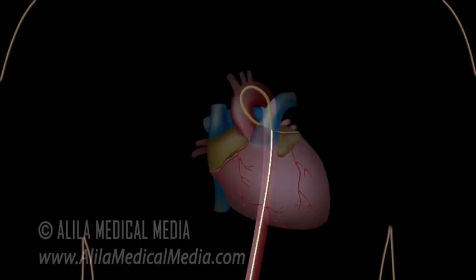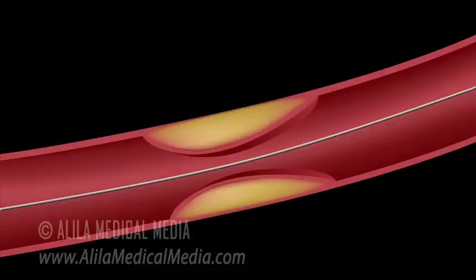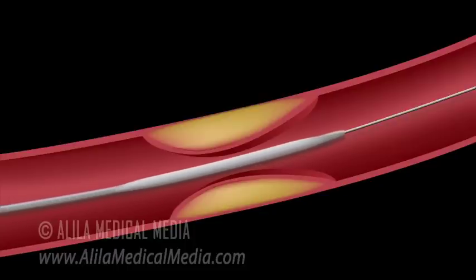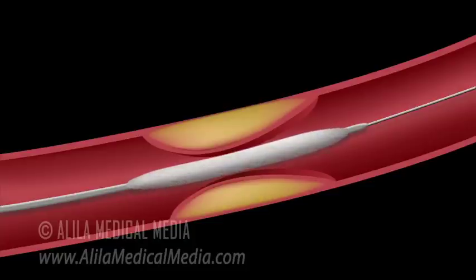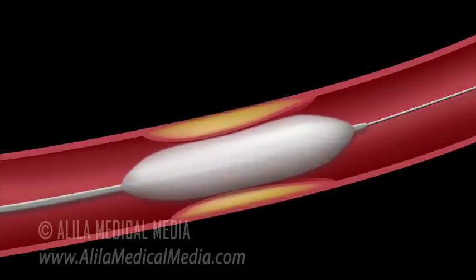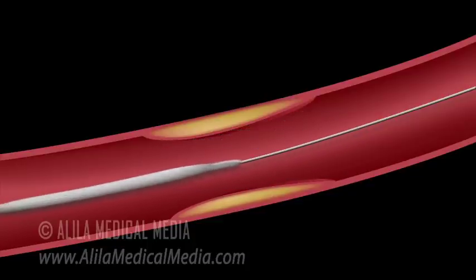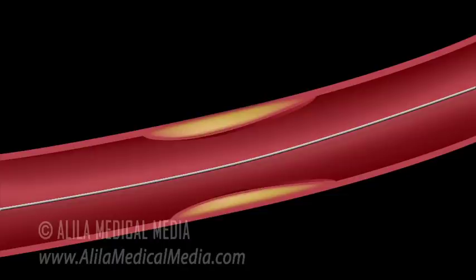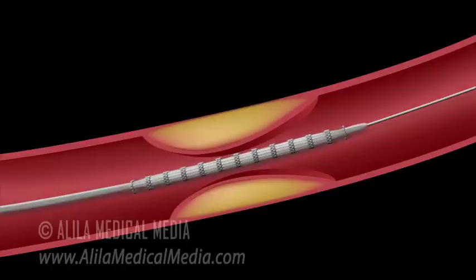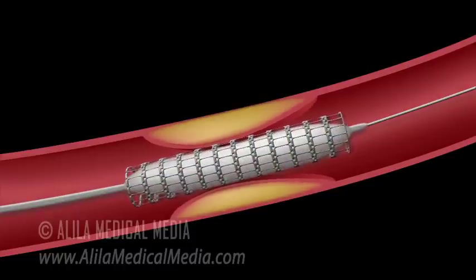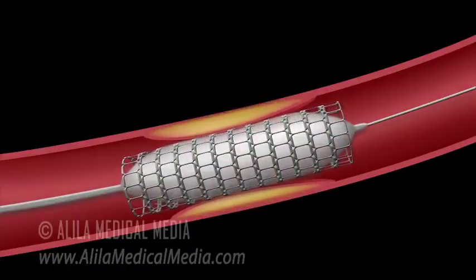A guide wire with a deflated balloon is inserted and pushed to the location of blockage. The balloon is inflated to crush the plaque. At the end of the procedure, the balloon is again deflated and removed together with all catheters and guide wire. In some cases, a stent is inserted together with the balloon, inflated, and left in place of the plaque to keep the artery open permanently.